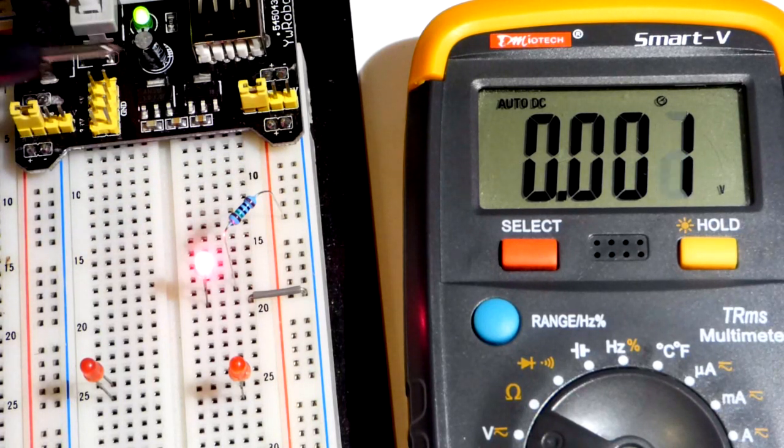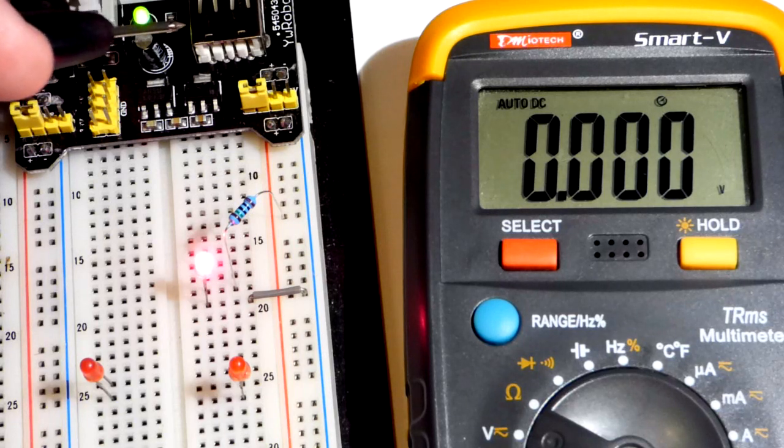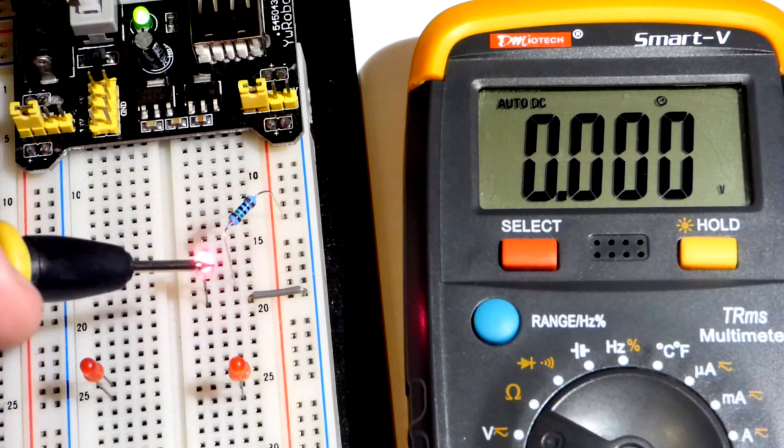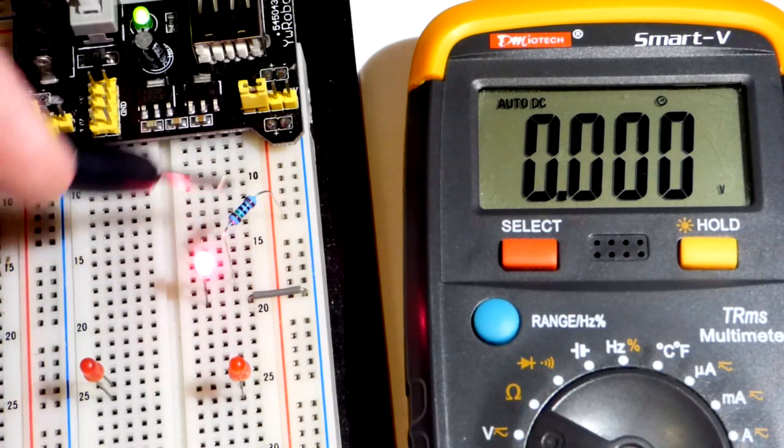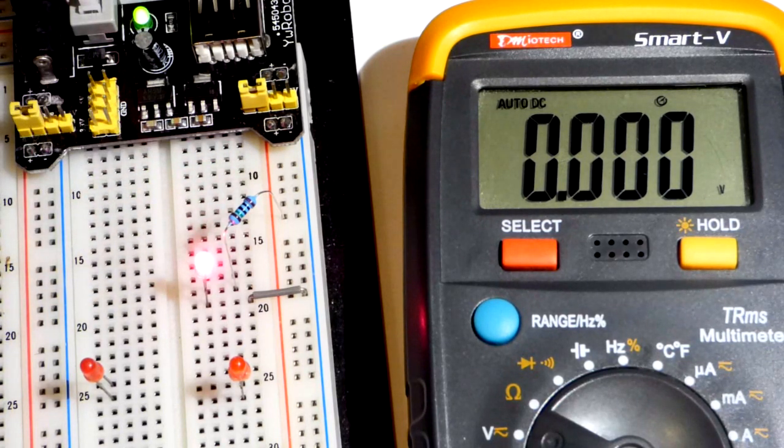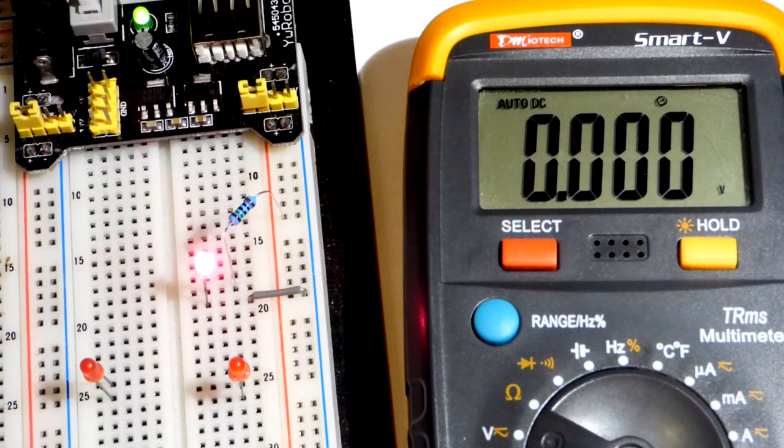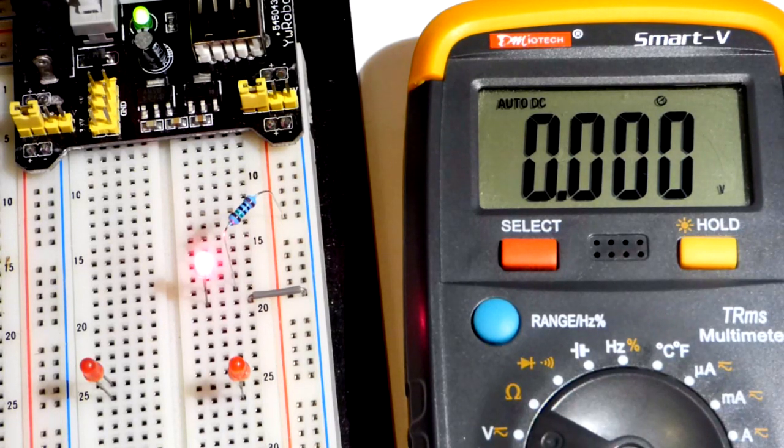So again, be careful going with higher voltages. Try to do the math first. Just estimate LEDs are going to block about 2 volts. The rest of the voltage is going to go across the resistor. You've got to make sure it doesn't exceed the power rating. I touched on that in the last video. I don't want to throw too much into this video. So I'm going to cut it off here. Hopefully you enjoyed it and it helps you. Thanks for watching. I will see you in the next video.